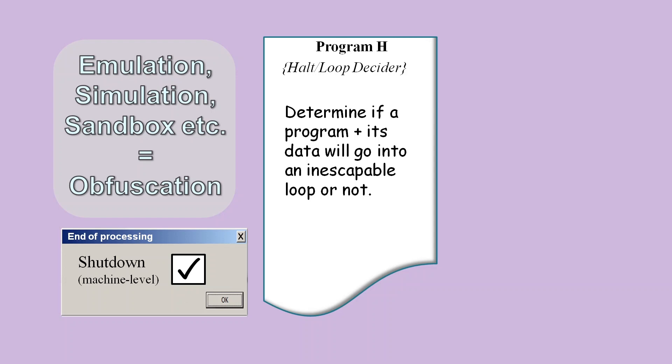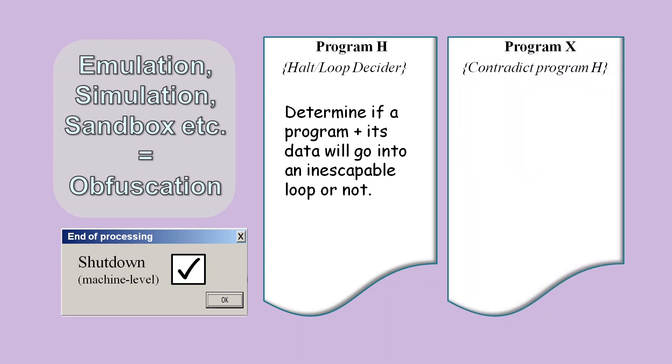Now consider program X. Here, it seems we are trying to construct a program that will contradict its own nature. If program X is going to loop, we need it to not loop. But if it's not going to loop, we need it to loop. So the functionality we are trying to achieve for program X appears to be absurd.